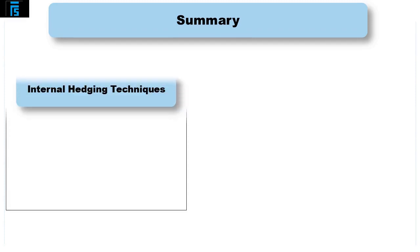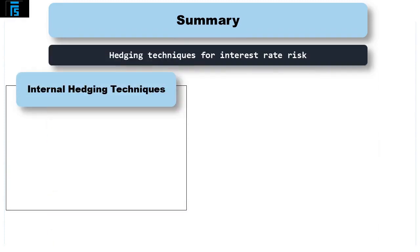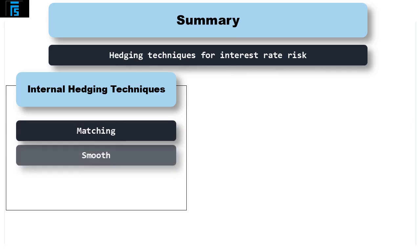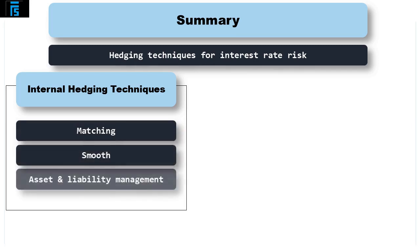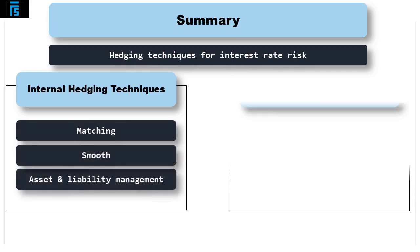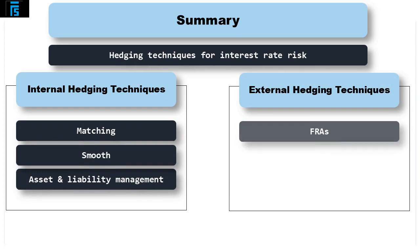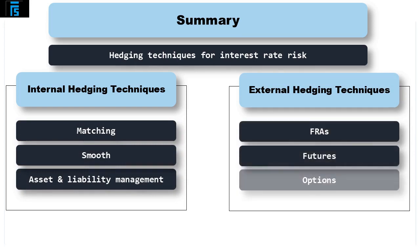In summary, internal hedging techniques can be used to mitigate interest rate risk, such as matching, smoothing, and asset and liability management. External techniques can also be used: forward rate agreements and futures and options. Remember, in your exam futures and options are not examinable numerically.